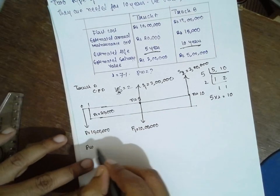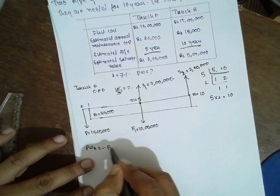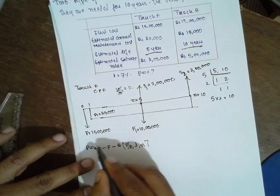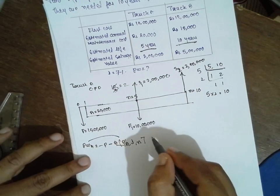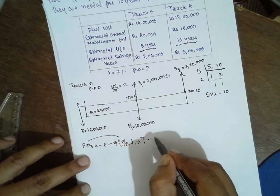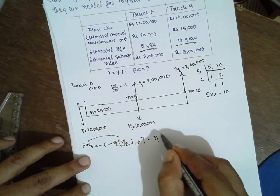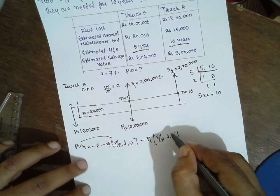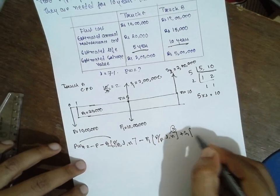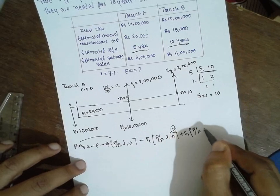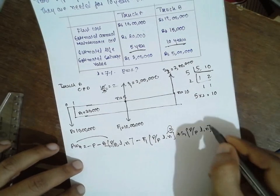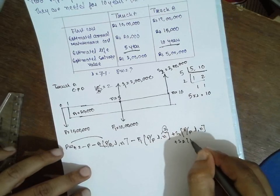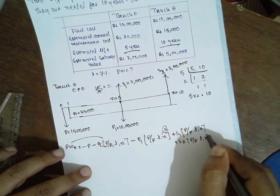Now PW for truck A: minus P, minus A into (P/A, I, N) — N will be 10 here. Next, minus F1 into (P/F, I, N) — N will be 5 here. Plus S1 into (P/F, I, N) — N will be 10 here.